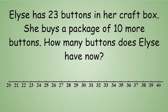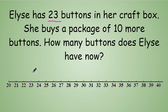Well, to begin, we know that Elise started with 23 buttons, so we're going to start at the number 23 on our number line. Then it says she buys a package of 10 more buttons, so that means I'm going to add 10 to this number.